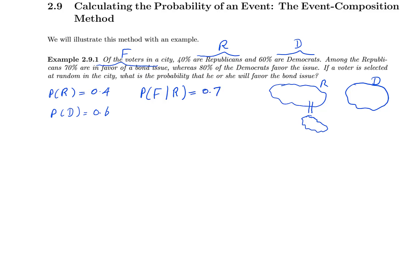Similarly, 80% of the Democrats favor the issue. We know this 80% is coming from Democrats — that is the given part. Therefore, probability of F given D equals 0.8.